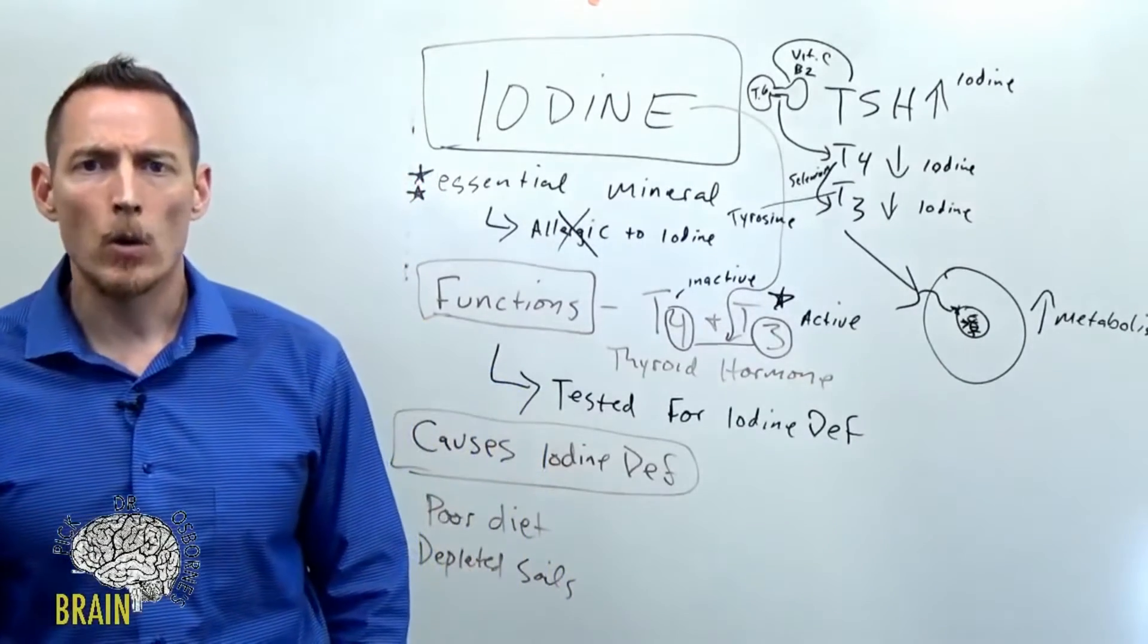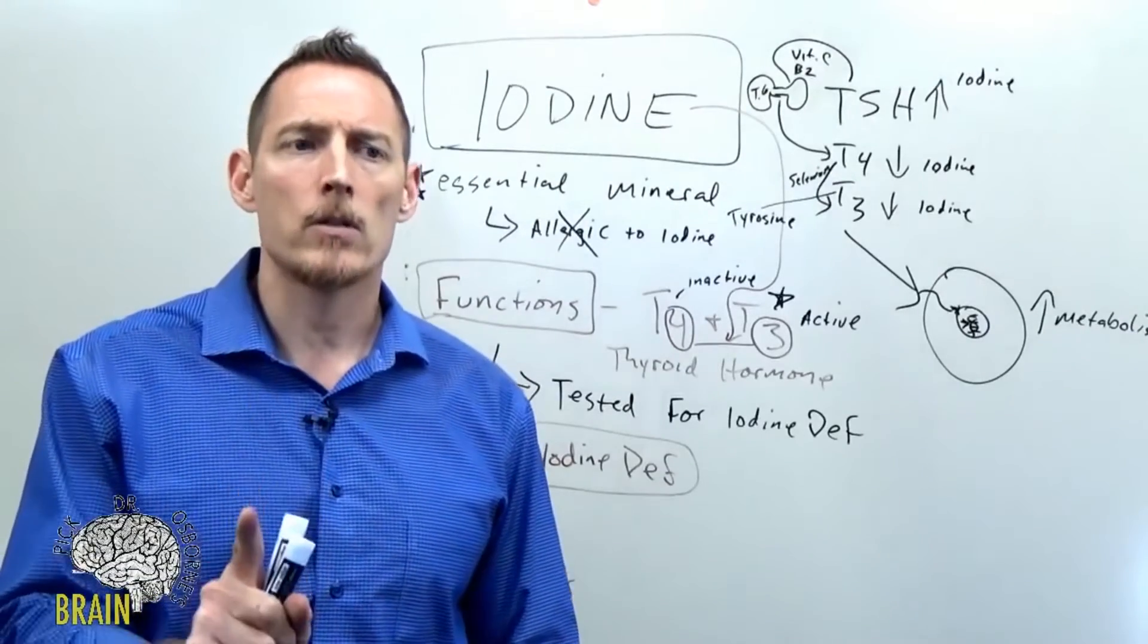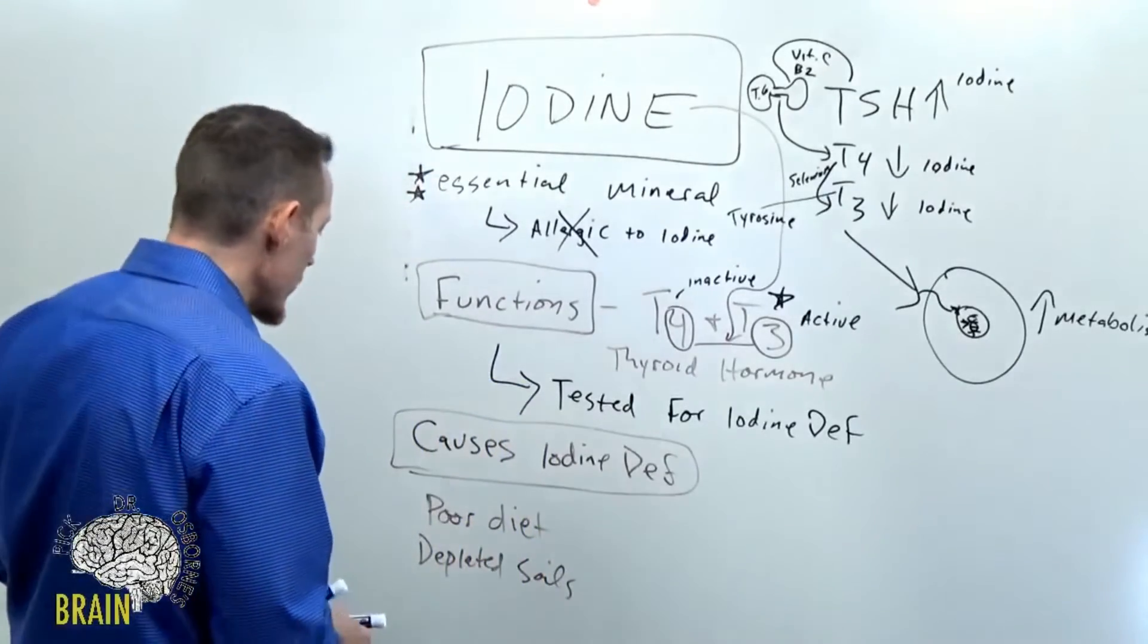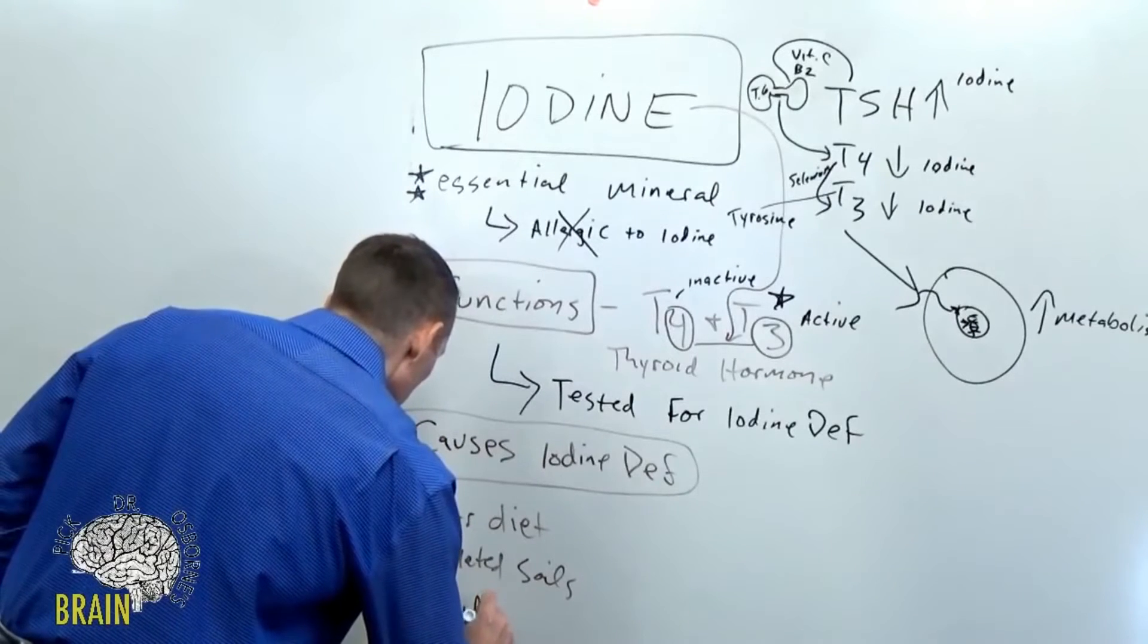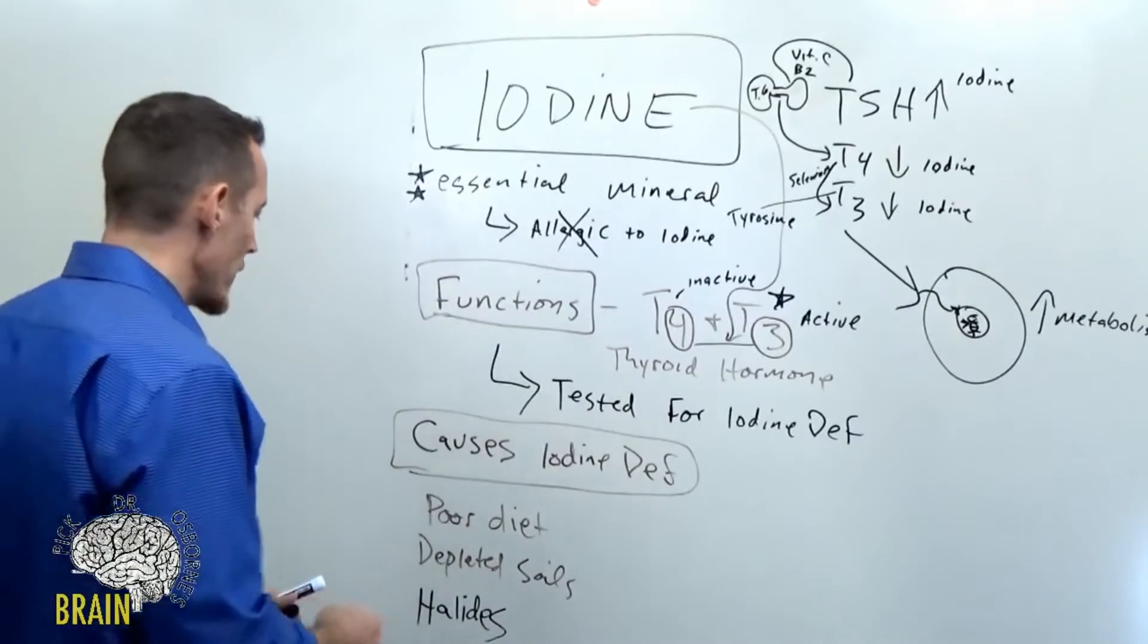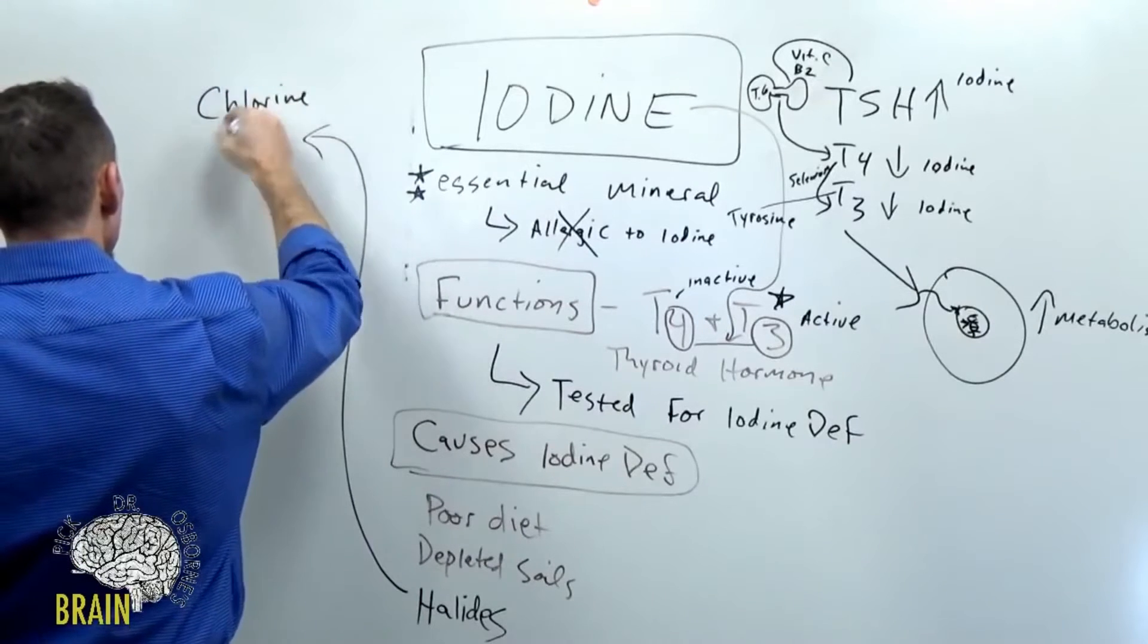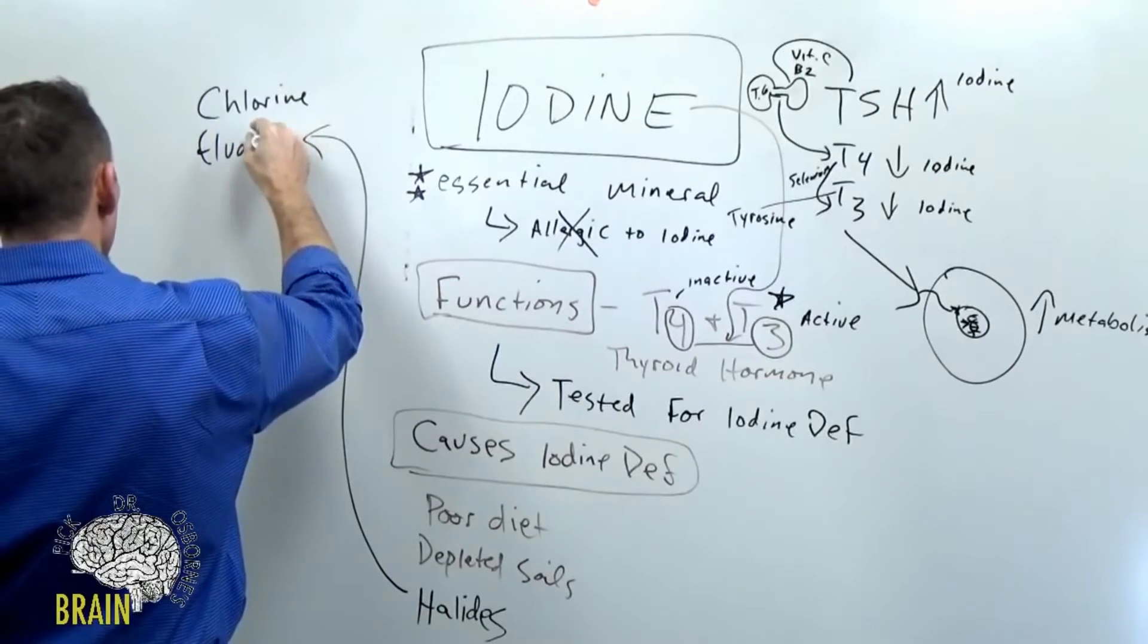Another issue is excessive goitrogen exposure. We'll talk about goitrogens in just a minute, so I'm going to pause there and I'll show you what those are in just a minute. But next I want to talk about halides. Halides, excessive halide exposure, halides don't necessarily cause iodine deficiency, but halides compete with iodine for uptake into the thyroid gland.